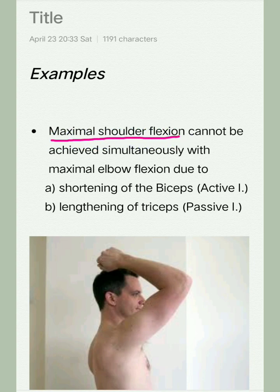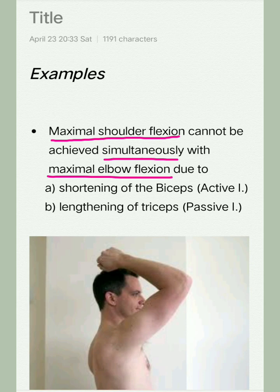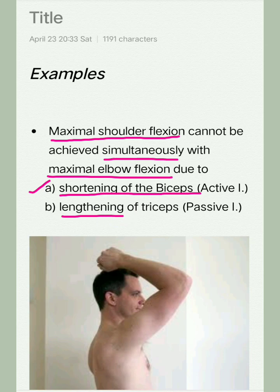For example, maximal shoulder flexion cannot be achieved simultaneously with maximal elbow flexion. Try it yourself — you won't be able to do it. This is due to shortening of biceps brachii, which is active insufficiency, and lengthening of triceps, which is passive insufficiency.